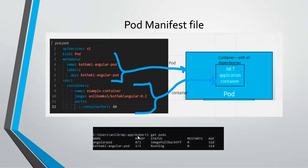On top of the pod, a deployment controller will come — we will see that later. To list pods, use the command kubectl get pods, which will show the number of pods running in the Kubernetes cluster. Regarding how we deploy the pod: controllers are required. However, even without a deployment controller or daemon set controller, you can still deploy a pod directly to the Kubernetes cluster — but your pod will not get the superpowers.